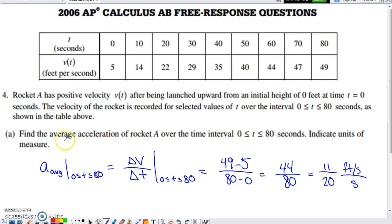In part A, it says find the average acceleration of the rocket on the interval from 0 to 80 and attach some units to that calculation. If you want the average acceleration, acceleration is the rate of change of velocity, the derivative of velocity. If we want an average rate of change, we're going to do a regular old slope calculation. We're going to take a difference in function values or y values divided by a difference in t values.